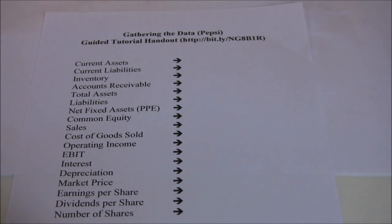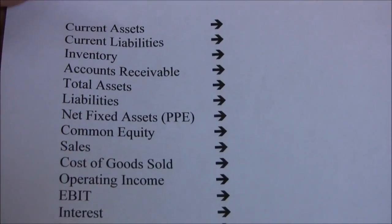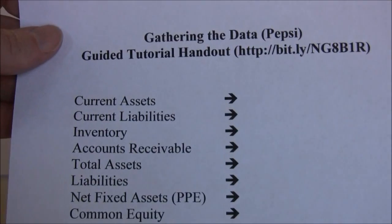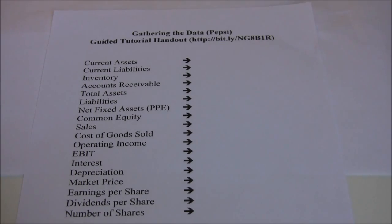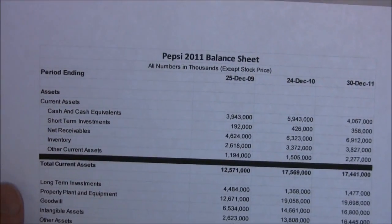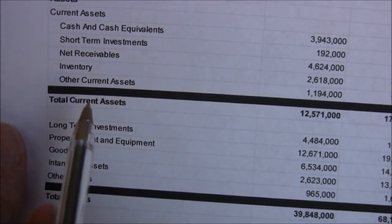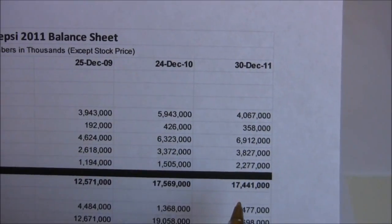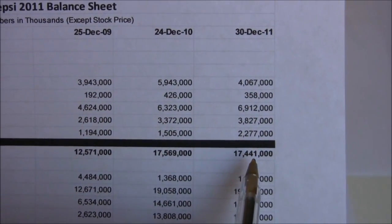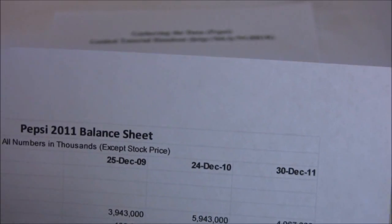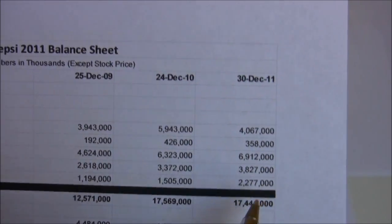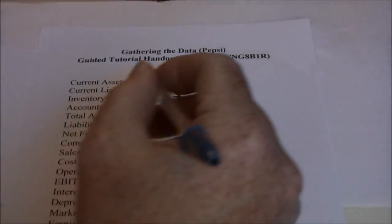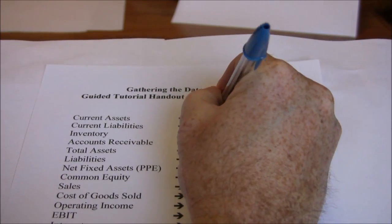Let's go back to our data gathering sheet. I've organized this so we'll start with the balance sheet data and then move to the income statement data. The first item is current assets. We get out our Pepsi balance sheet, look up total current assets for 2011 — that's 17,441. Note that all numbers are in thousands, so that's actually $17.441 billion. We'll write that down as 17.441.